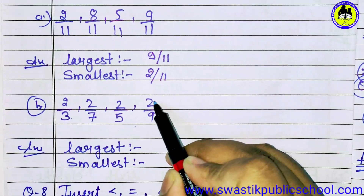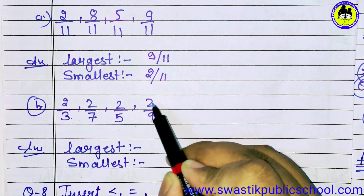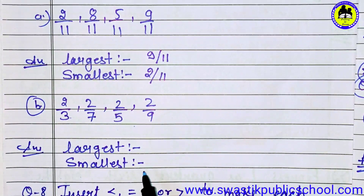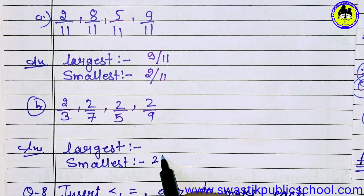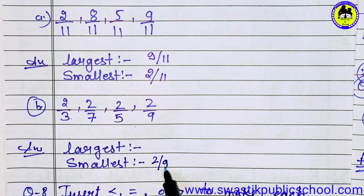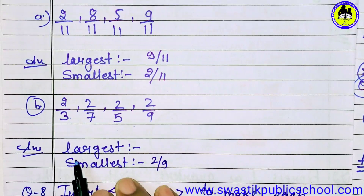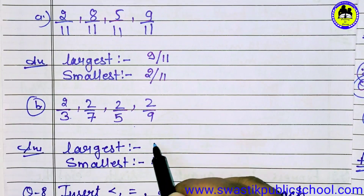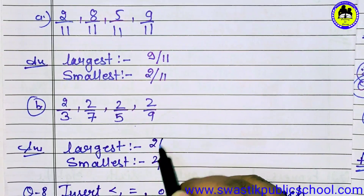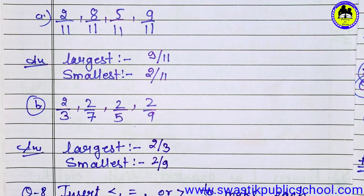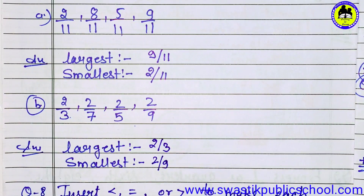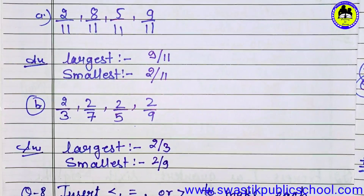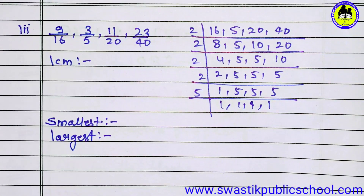So 2 upon 9 will be the smallest, and the largest will be 2 upon 3. Okay, so this is how we did part B. Now we will do part C of this question.